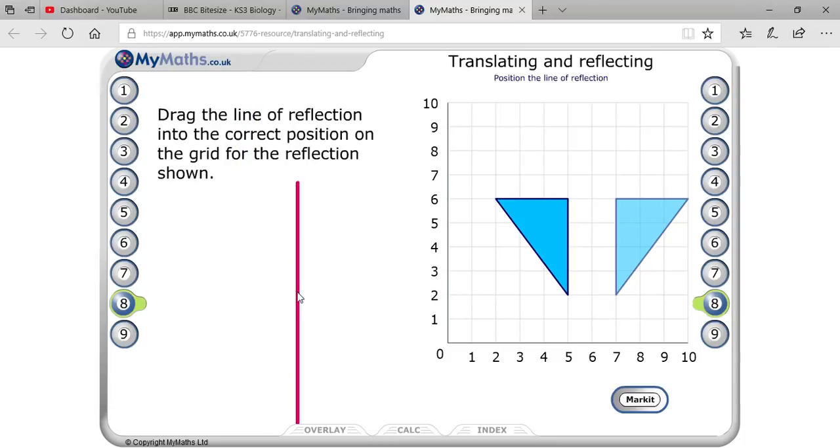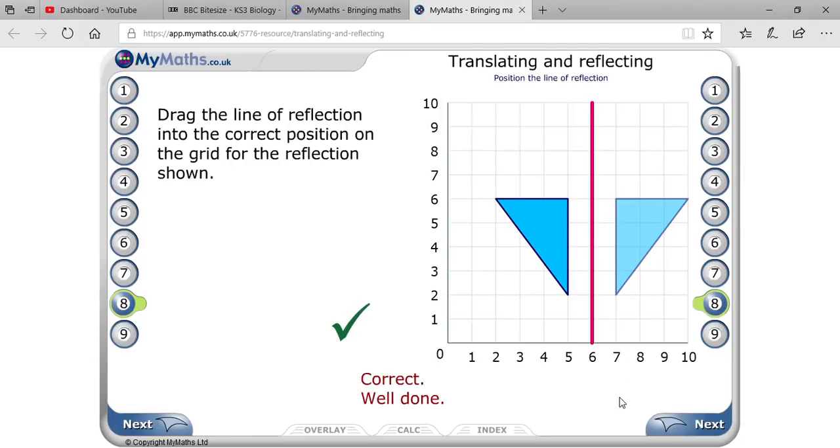You can see that reflection is given, object is given. They are saying draw the line of symmetry. So it will be here, and if you mark it, then yes, that's the right answer.